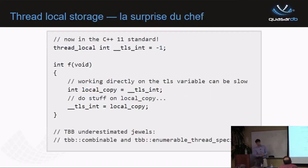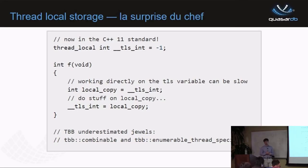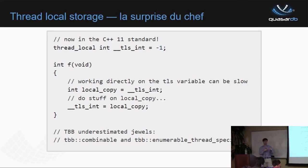Another technique is thread-local storage — slower than registers, but not shared. TBB has 'combinable' and thread-specific containers. What we call spread counters: if you want to count the number of entries in your database, the naive approach is an atomic counter that every thread increments. But that won't scale because all threads try to access the same atomic value. Instead, every thread increments a counter in local thread storage, and only when you want to know the total do you sum all of them.